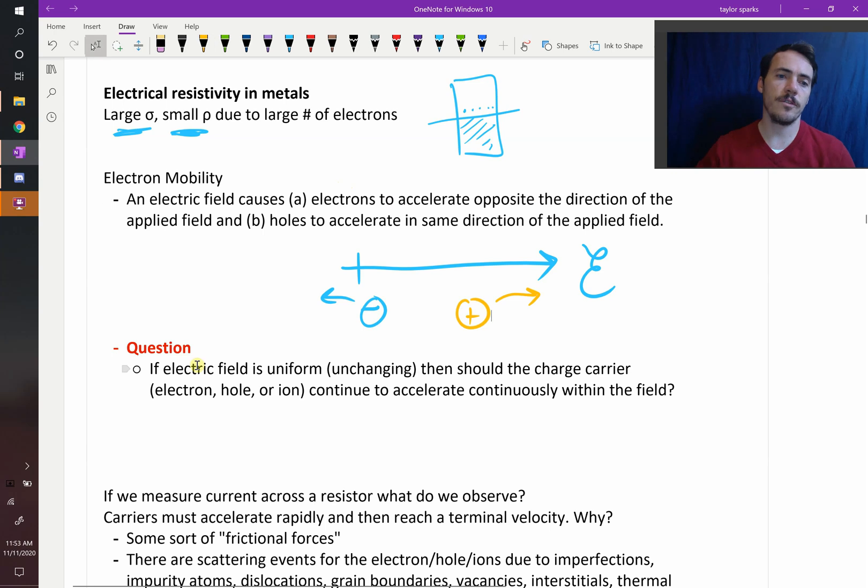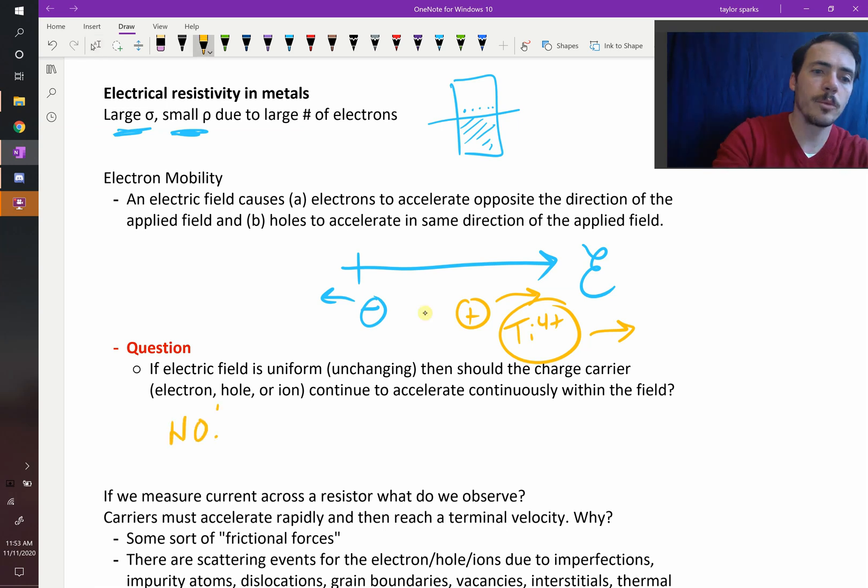Here's a question: If the electric field is uniform all the way across your material, so it's not changing, then should the charge carrier—whether it be an electron, a hole, or an ion like a titanium 4+ ion—continuously accelerate within the field? We've just said that if this field exists, shouldn't these things just keep on accelerating as long as they're in that field? The answer is no, but it's a little bit tricky.